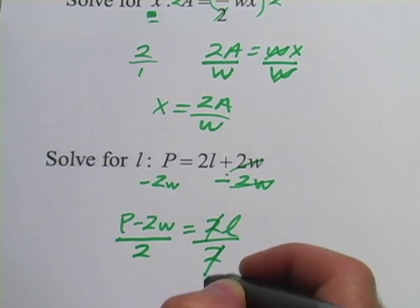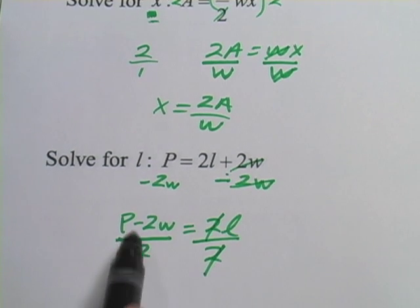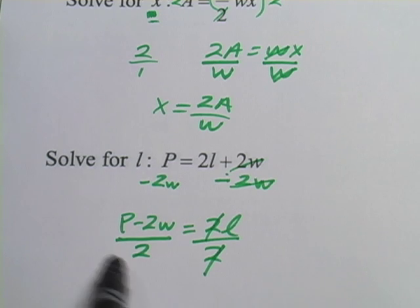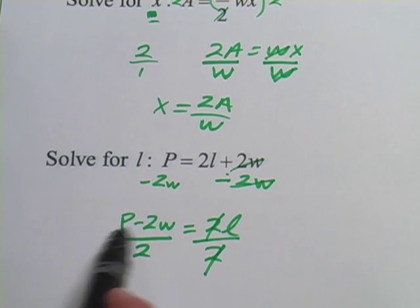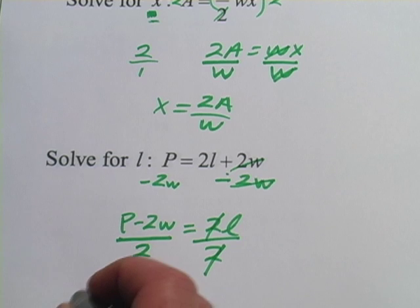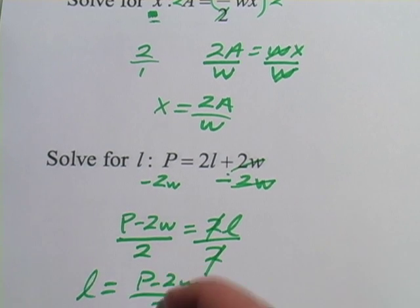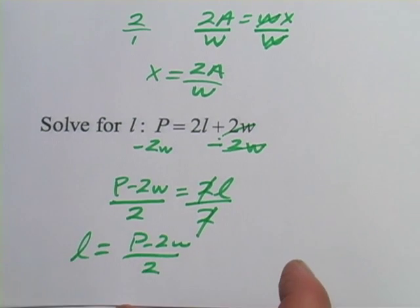Here, the 2s cancel. And there's no way to cancel 2s here. If you had a 2 up next to the P, then there'd be enough 2s to cancel. But there isn't here, so nothing can cancel here. And we get L equals P minus 2W over 2. If you want to write that left to right, it would look like that. Whoops. There we go.